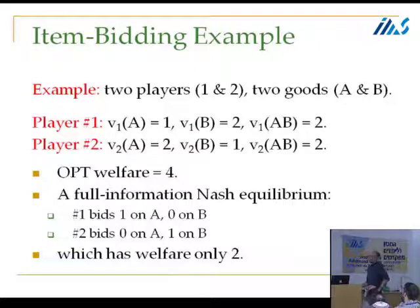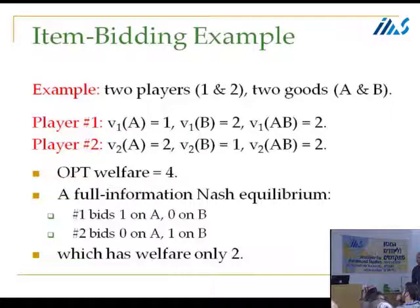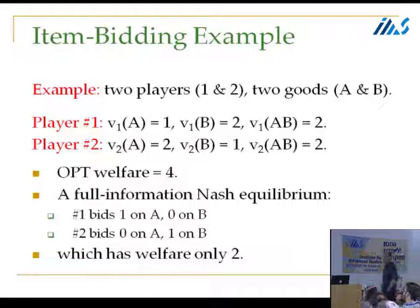In particular, consider the following bids: bidder one bids one on good A and zero on good B; bidder two bids zero on good A and one on good B. This is also a pure Nash equilibrium in the full information game with welfare only two — people get the wrong goods. The reason it's an equilibrium: a bidder gets the good it likes less but gets it for free. To get the good it values more it would have to pay one, since we're using a second price auction on each good.